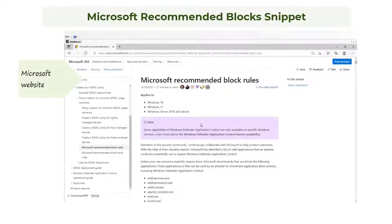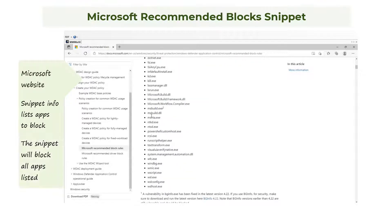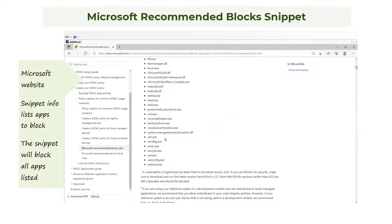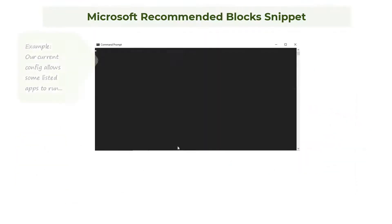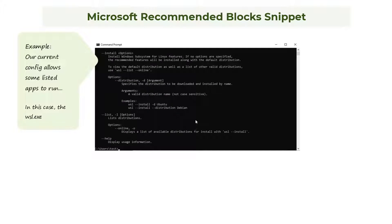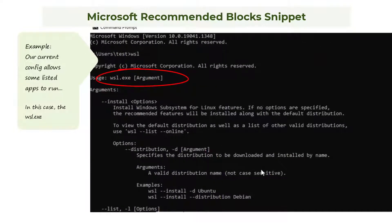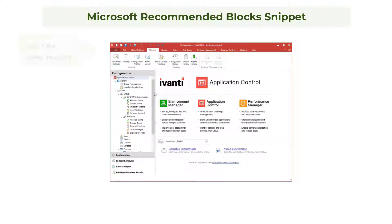This first example is for blocking an application or applications. Microsoft has identified a list of applications which have the potential for malicious use and generally recommends they are blocked. The Microsoft Recommended Block Snippet does just that — it integrates with your application control configuration and prevents users from running potentially harmful software. Let's assume your default configuration currently allows certain executables on this list to run, such as WSL, the Windows Subsystem for Linux, and end users are free to open and run this as they wish.